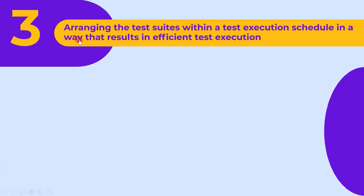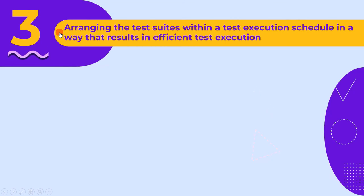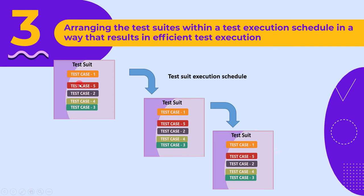The third activity is arranging the test suites within a test execution schedule in a way that results in efficient test execution. During test implementation, we create many test suites and schedule them in order of execution. For example, some automated scripts may require testers' involvement — those tests can run when we are in the office. There could be some automated scripts which do not require human intervention; we can plan them for a night run.